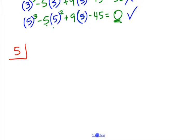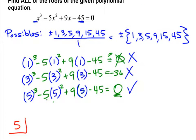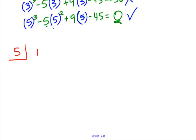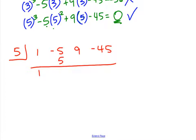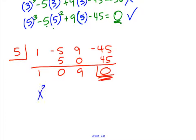We'll take that 5 out by doing synthetic division. With 5 dividing into coefficients 1, negative 5, 9, negative 45: bring down 1, 5 times 1 is 5, add to get 0, 5 times 0 is 0, add to get 9, 5 times 9 is 45, remainder is 0. We want that remainder of zero confirming it's a root. What we're left with is the polynomial x squared plus 9.